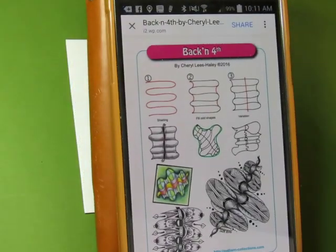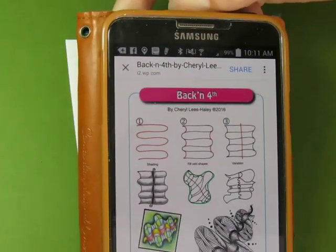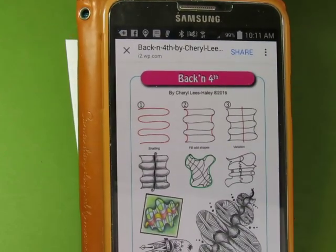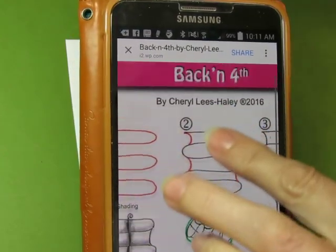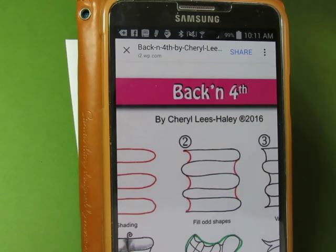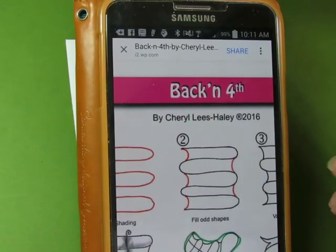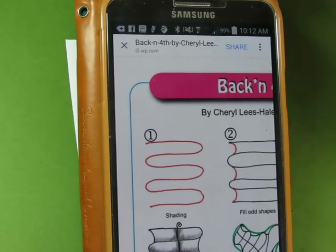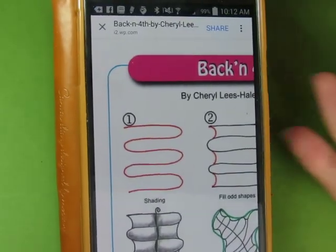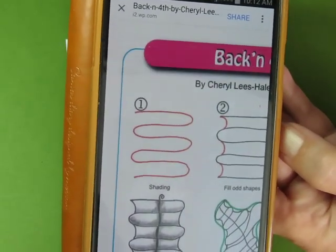Hi everybody. Happy Halloween to you. Today's Daily Tangle is called Back and Forth by Cheryl Lee Haley. Pretty simple one. I think it's going to be one that you can really do your own thing with.